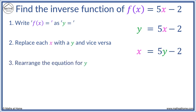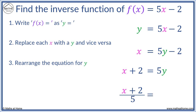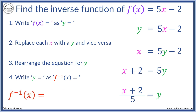Now we rearrange this equation for y — we want y equals. We add 2 to both sides of the equation. We have x plus 2, and we just have 5y on the right-hand side. Now we divide by 5. We get x plus 2 over 5, equal to y. Finally, we write y as f to the minus 1 of x, as this is our inverse function.